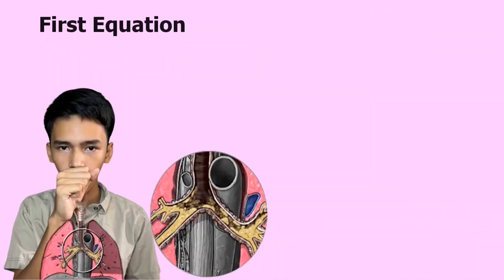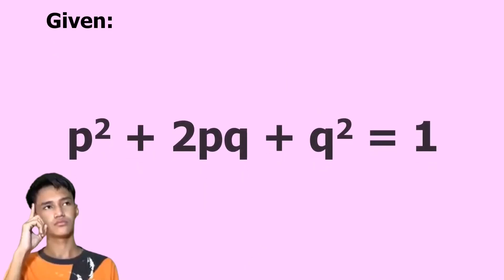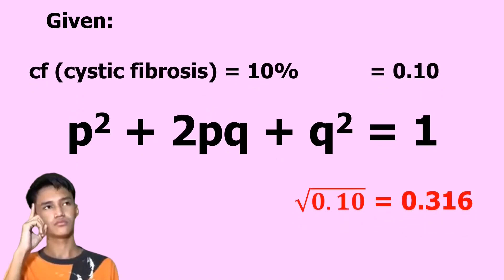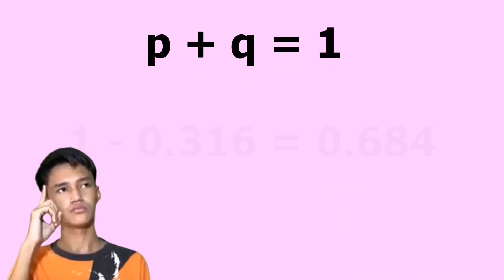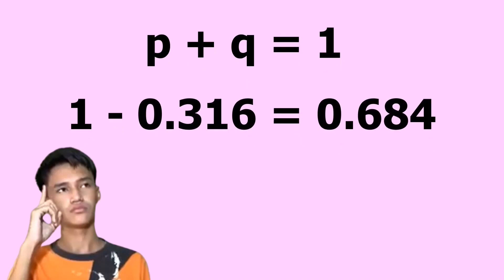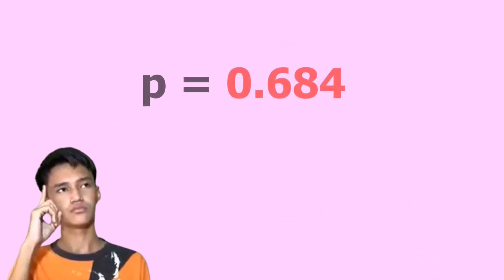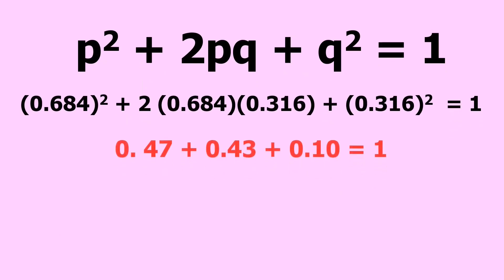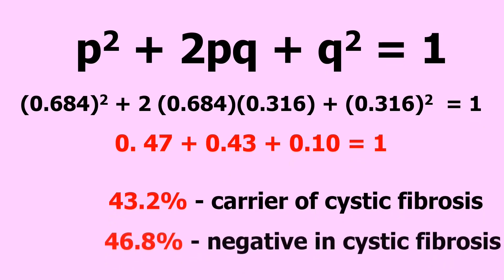This affects one individual out of 10 of the whole population during the period it was discovered. Hardy-Weinberg's first equation is useful in knowing the exact proportion of carriers of cystic fibrosis. If the given is 0.10 equals Q squared, we can compute for Q by getting the square root of 0.10. Using P plus Q equals 1, P equals 1 minus the square root of 0.10, which is 0.316, so P equals 0.684. In conclusion, if 10% of the population is CF positive, there will be 43.2% carriers of CF, while 46.8% of individuals are negative for CF.